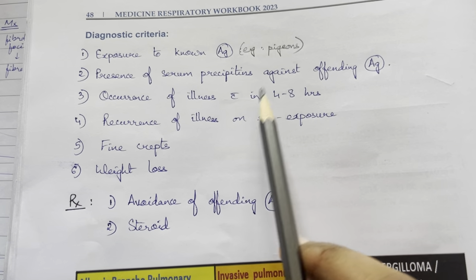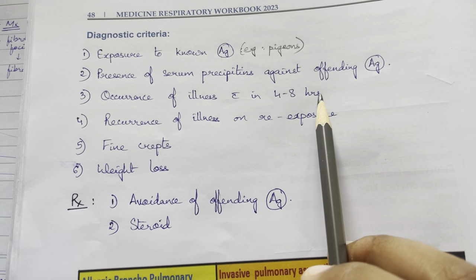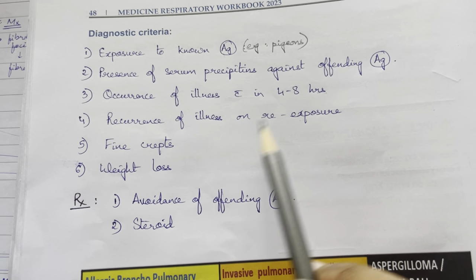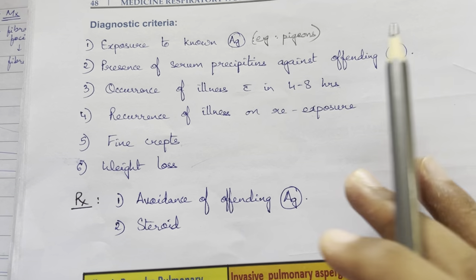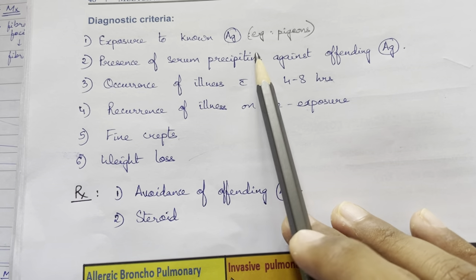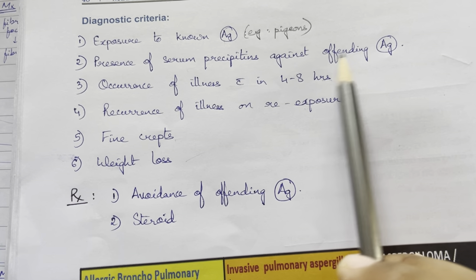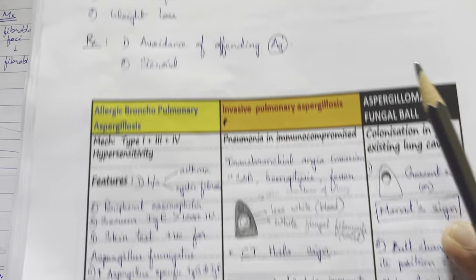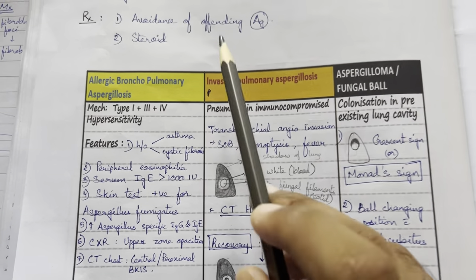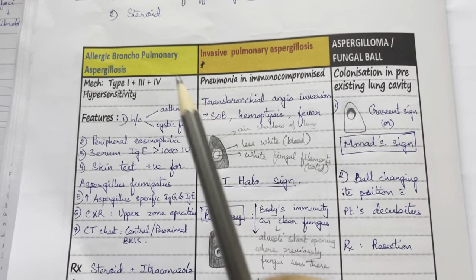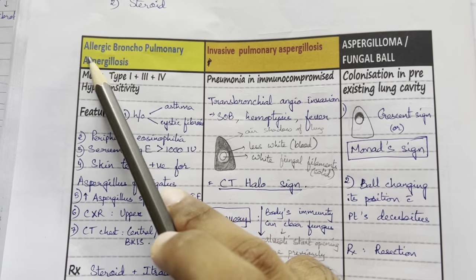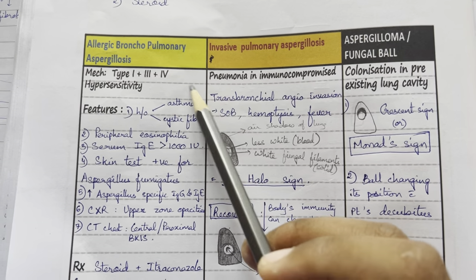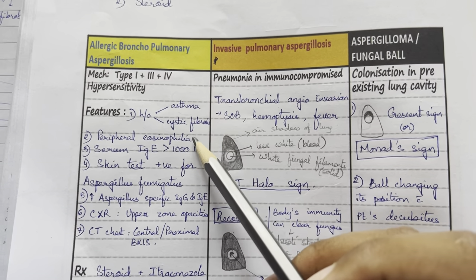Diagnostic criteria for hypersensitivity pneumonitis: exposure to the antigen, occurrence within 4 hours of exposure, recurrence on re-exposure, fine crackles, weight loss, and presence of serum precipitins against the offending antigen. Treatment: avoidance of the antigen and steroids.